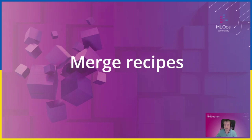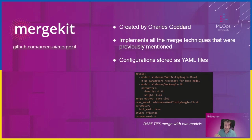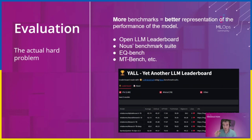In this section on merge recipes, I want to talk about how to do this efficiently. The key library powering this entire stack is called MergeKit, created by Charles Goddard. It implements all the merge techniques we discussed. It's really powerful — you get nice YAML configuration files for your merges, so you can easily share and iterate on them.